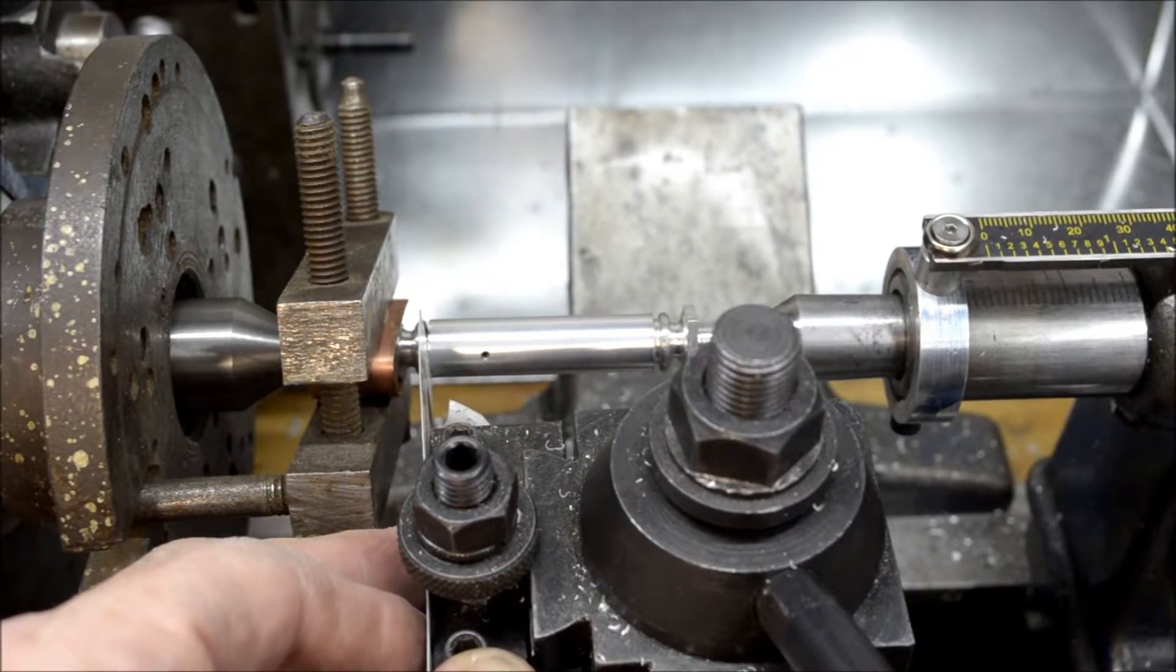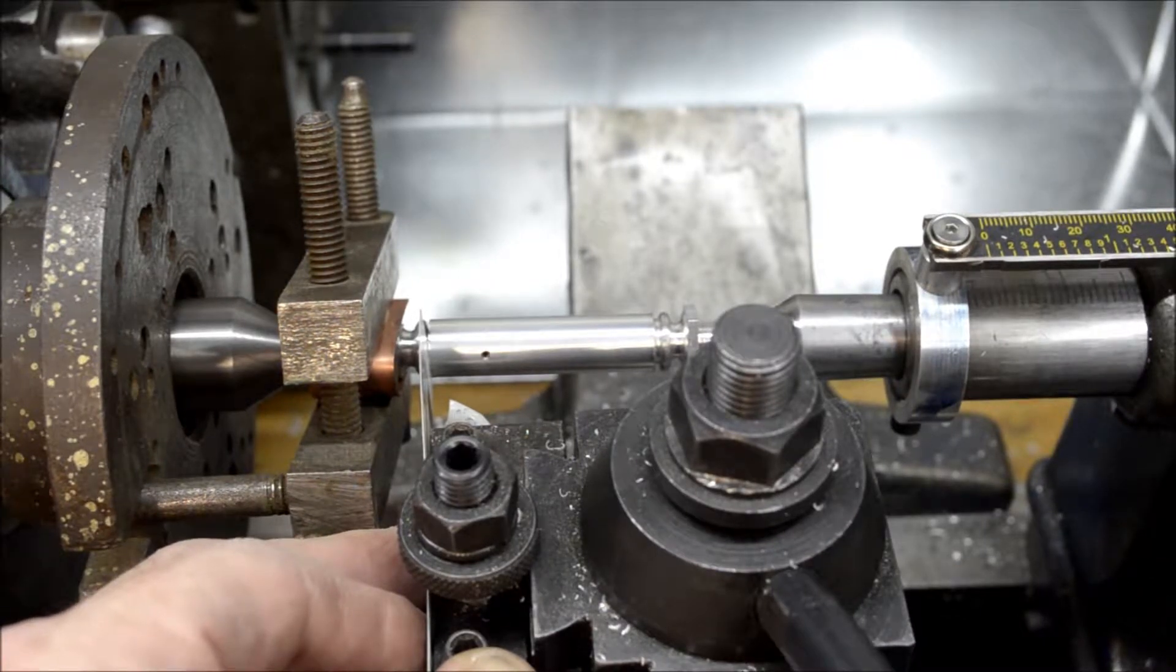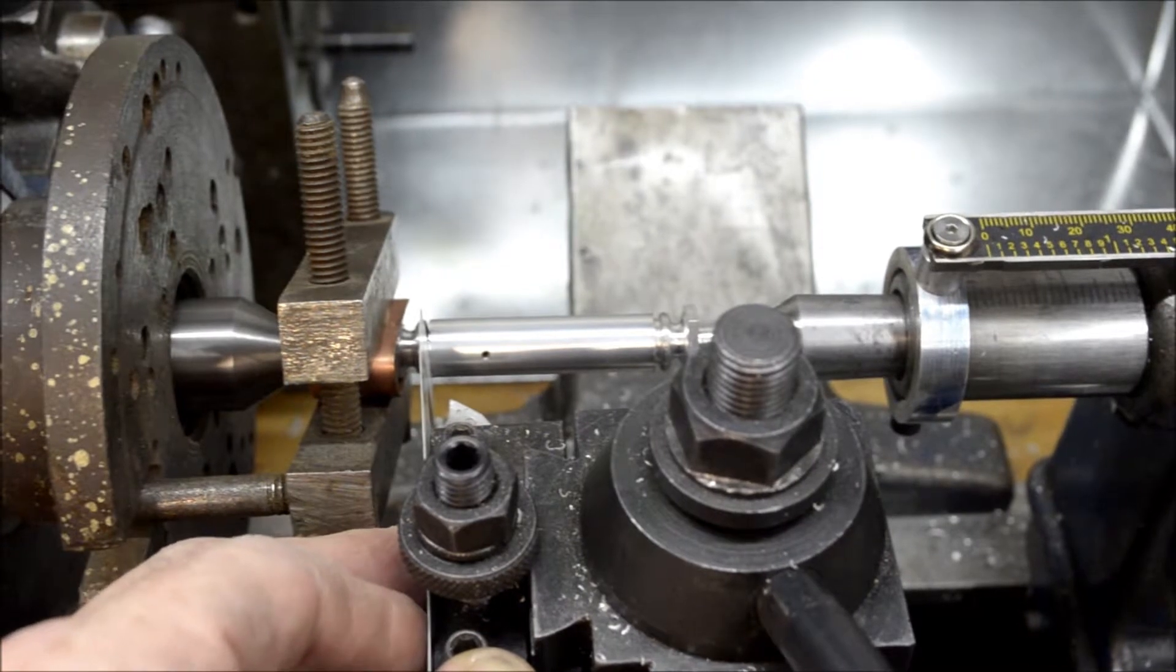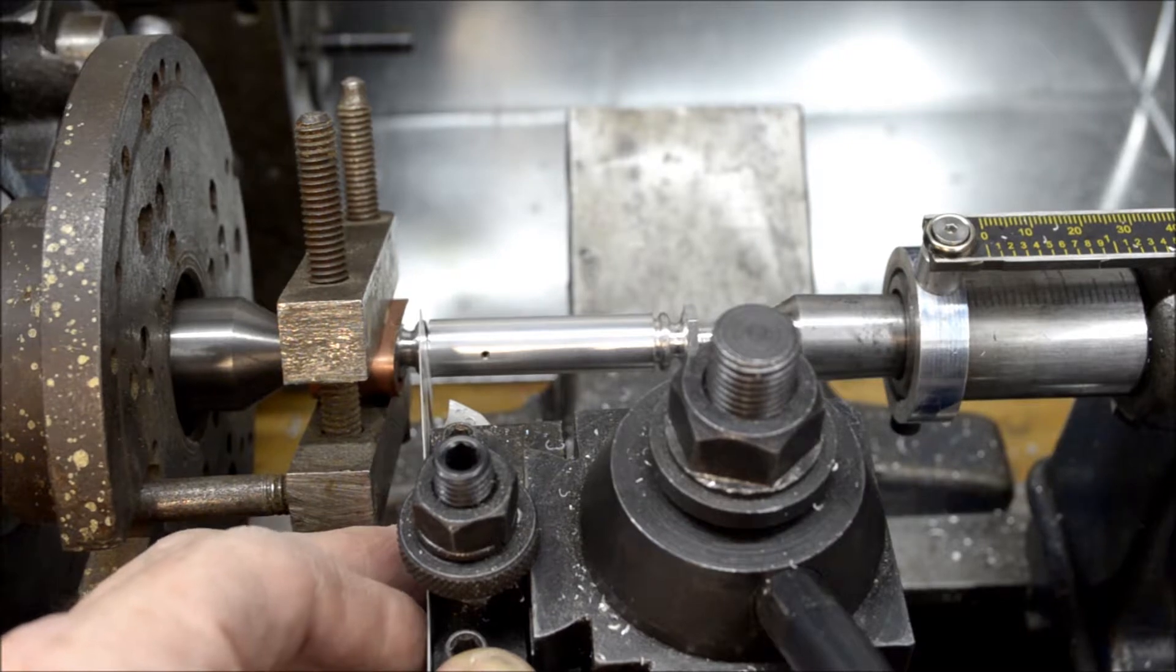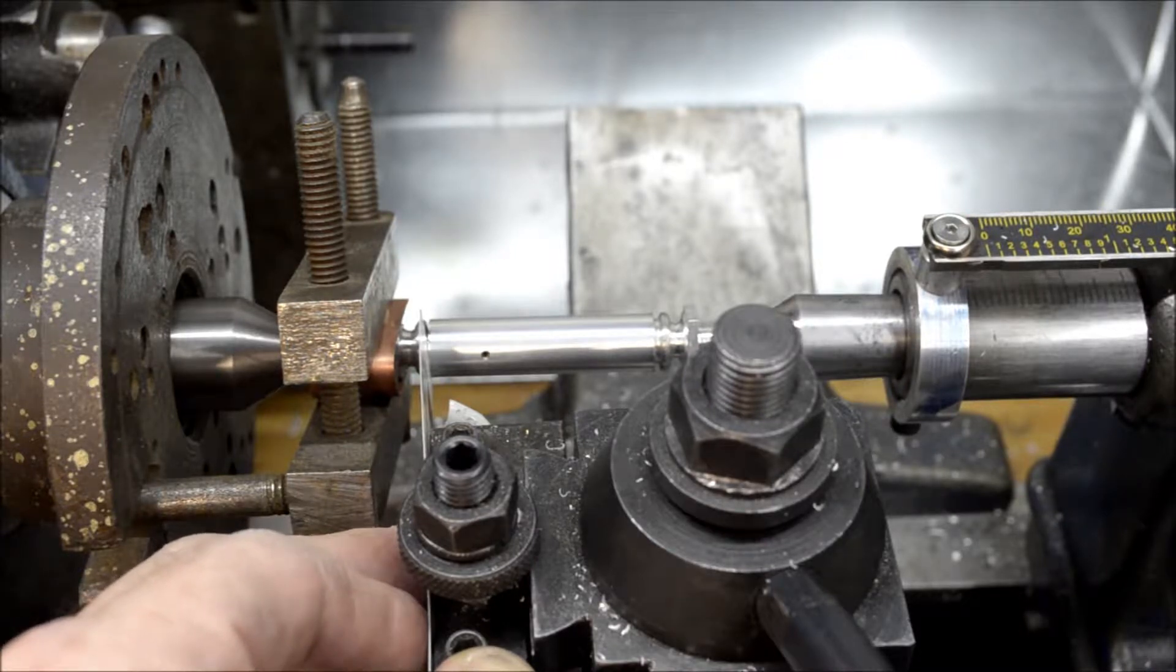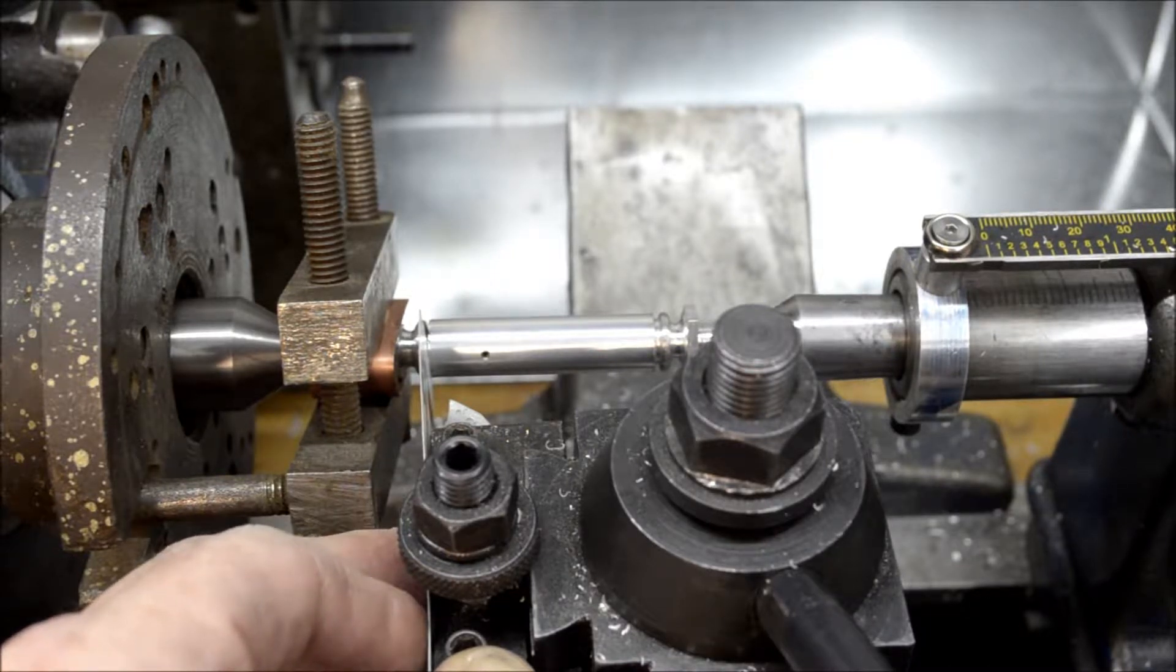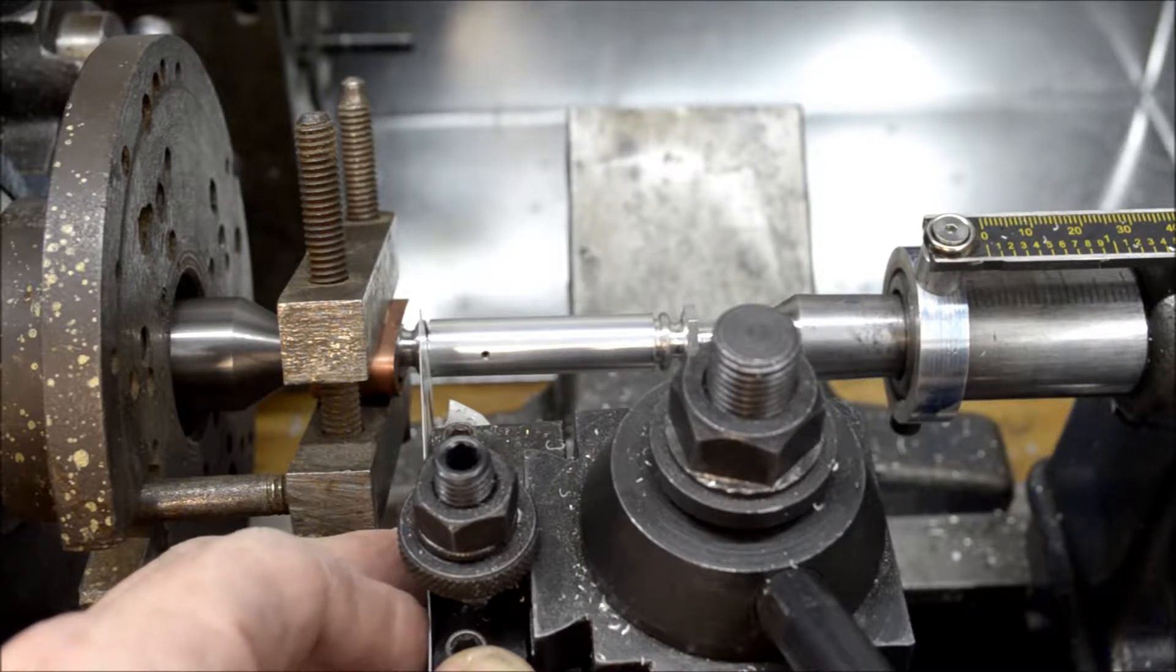All right, so this is where we're going to calculate the offset for the taper that I'm going to turn. And this is also the spot, or the part, where all the machinists, the real machinists are going to cringe. But I don't want to get too carried away trying to figure out something when it's just a simple taper that's really not a critical taper. So I come up with this simple technique, if you want to call it that.